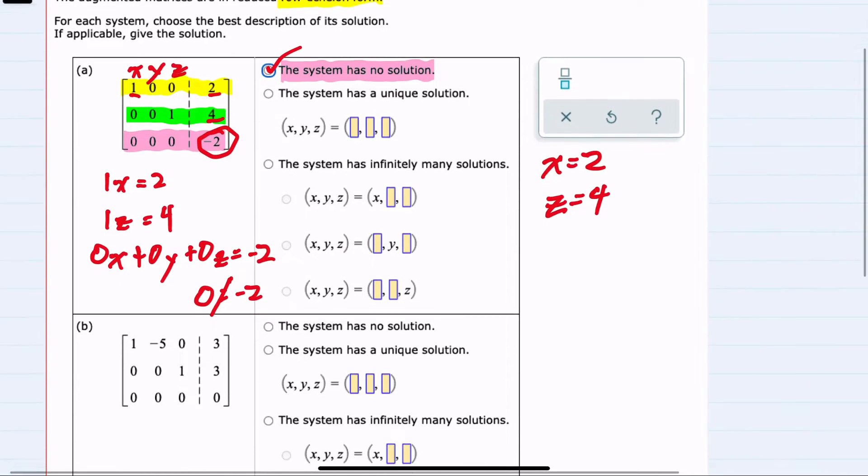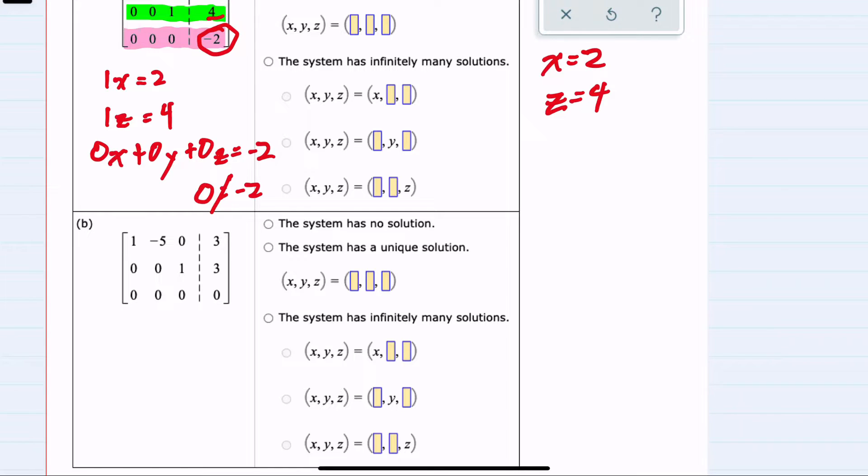Looking at our second system of linear equations, our columns are again x, y, and z. This time, I'm going to start with this second row. Since it has a 1 in the z column, I know that 1z will equal 3. So we have our z value.